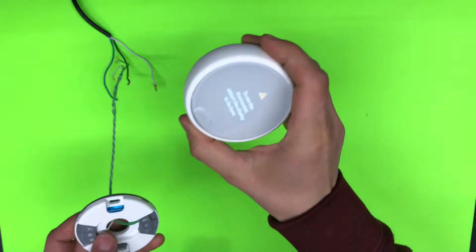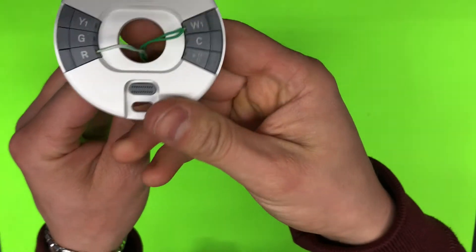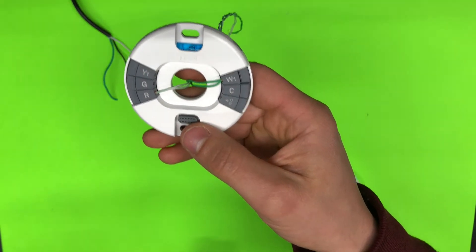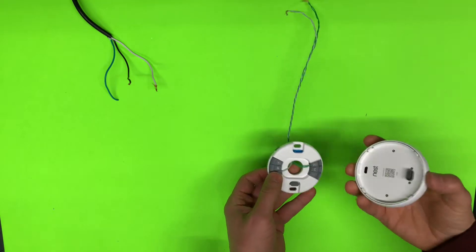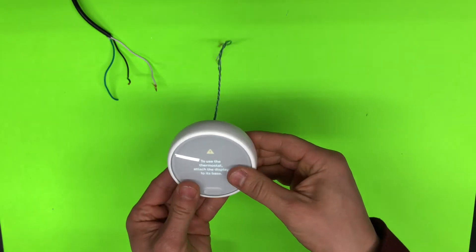So what we will need, we will need any smart thermostat. I'm using Nest E. In the base we will just connect two wires, R and W1. So let's attach the thermostat.